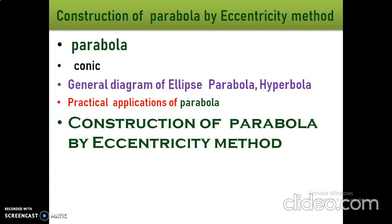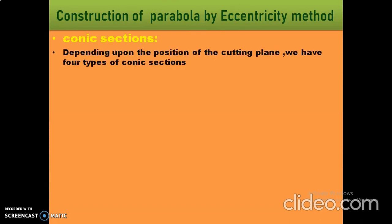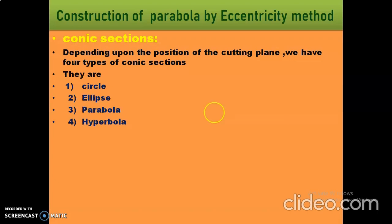Before that, we have already discussed about conic sections. How can we get the conic sections? Depending upon the position of the cutting plane, we have four types of conic sections: circle, ellipse, parabola, and hyperbola.